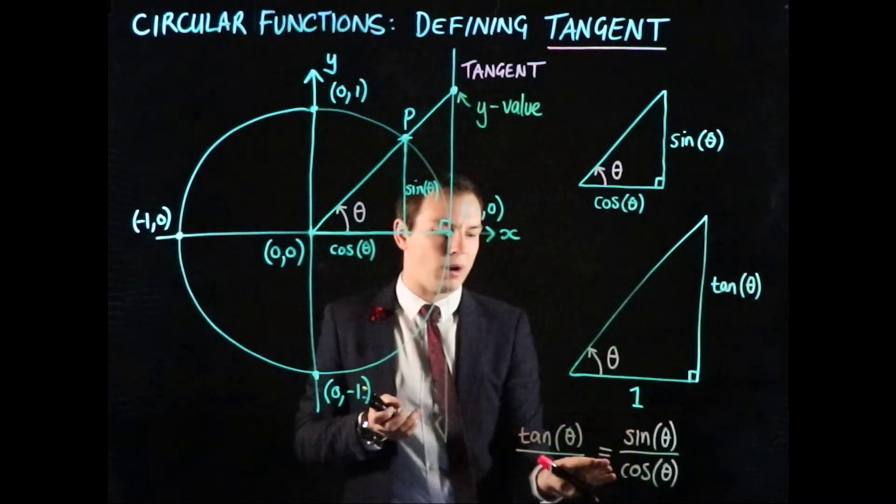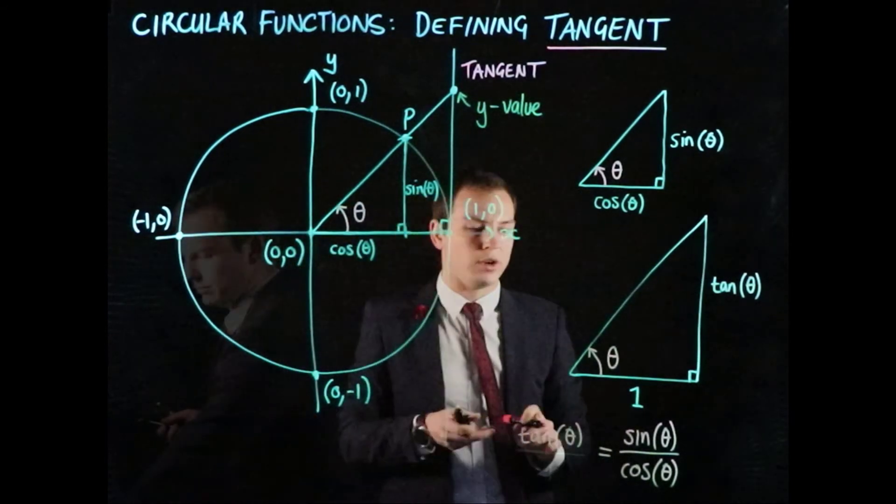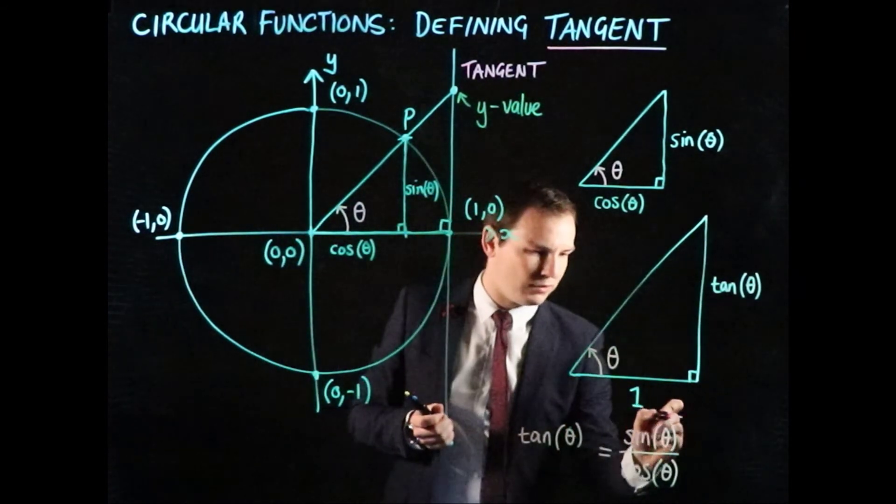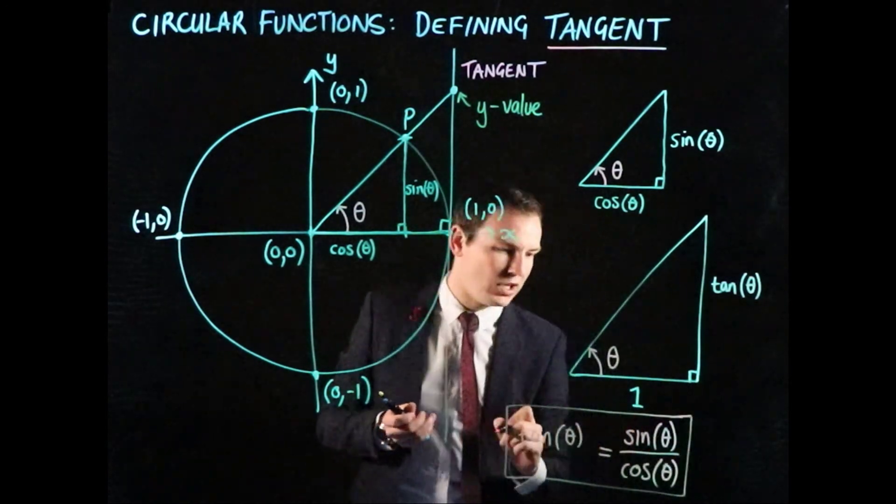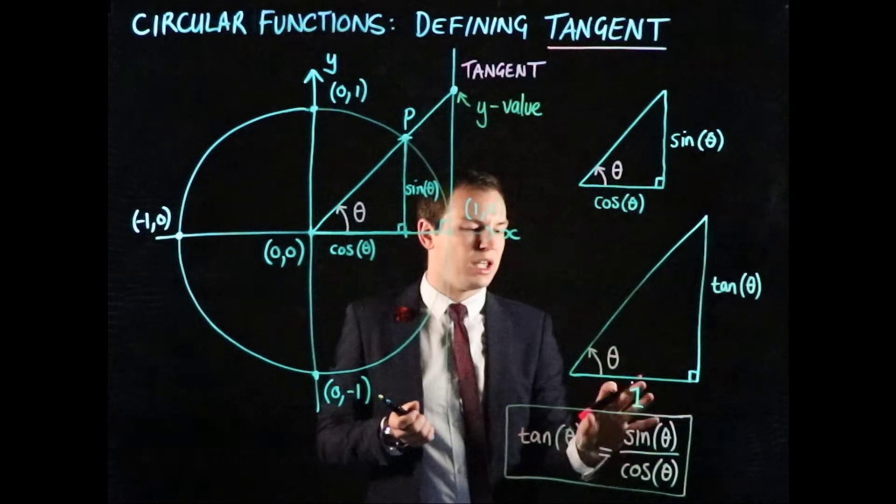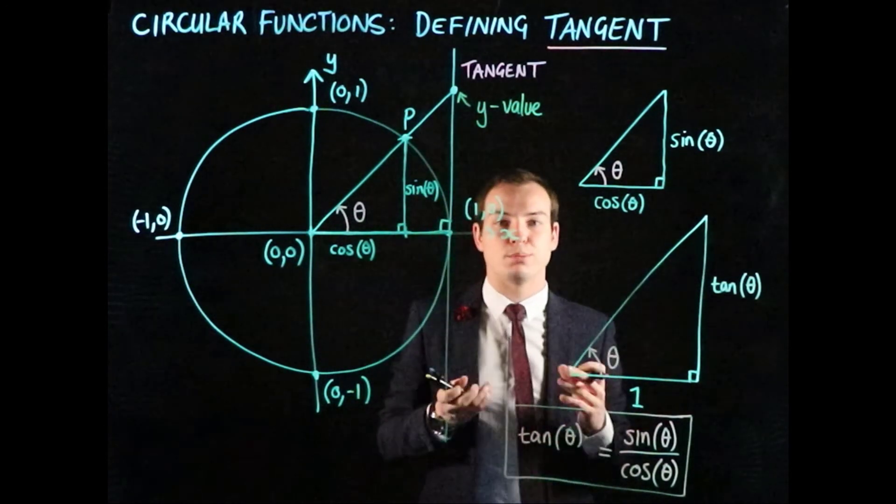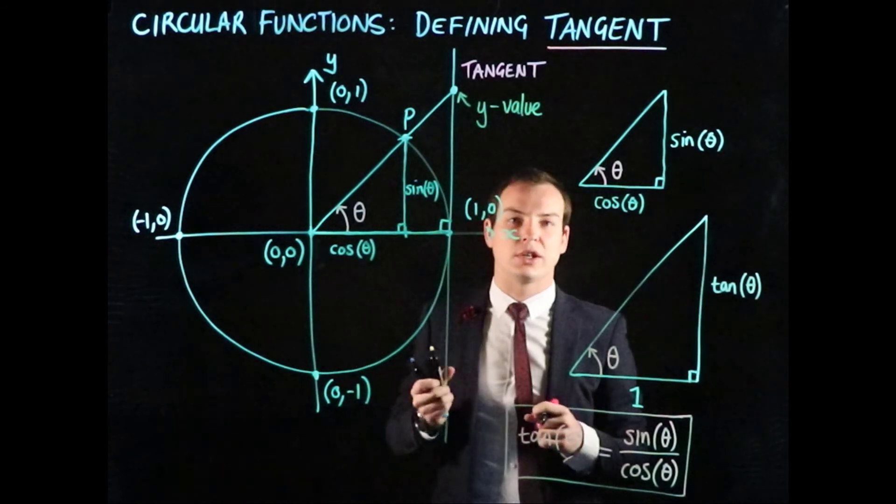Tan(θ) divided by 1 is just tan(θ), so we can simplify this. This gives us another way of defining tangent: tan(θ) equals sin(θ) over cos(θ). This is a useful relationship you'll use when dealing with more complicated aspects of circular functions.